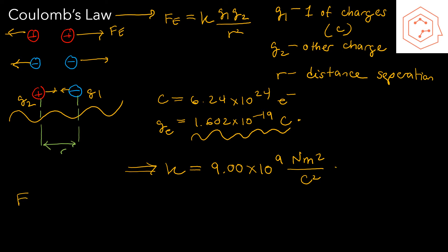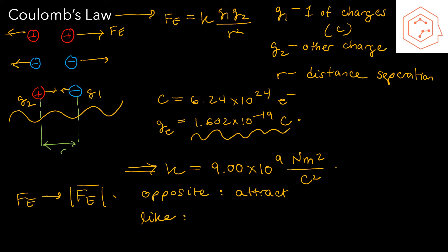Since we're only putting in magnitudes, Fe is going to be a magnitude of the electric force. To get the direction: if it is an opposite-charge situation with a positive and negative charge, then they will attract. If it is a like-charge situation, the charges will repel. The force is radial — they repel away from each other's centers or attract towards each other's centers.